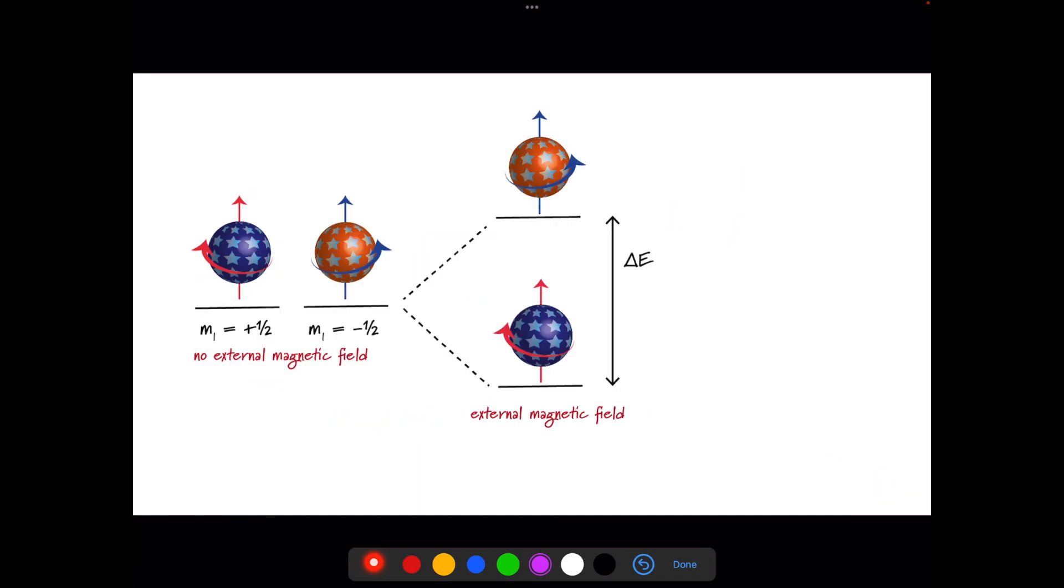Magnetically active nuclei generate a small magnetic field when they spin. And if we take these atomic nuclei and place them in an external magnetic field, this will cause the magnetic field of the spinning nuclei to align either with the external magnetic field or against it. Now, the nuclei that were spinning clockwise have a slightly lower energy than the nuclei that were spinning anti-clockwise.